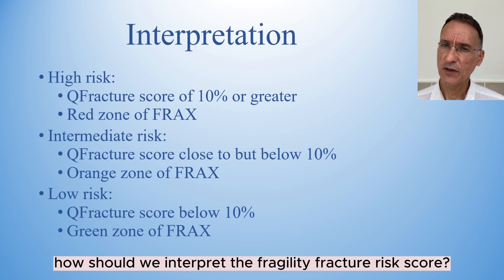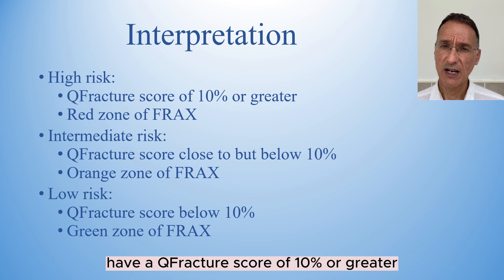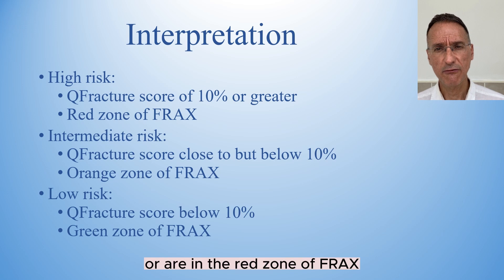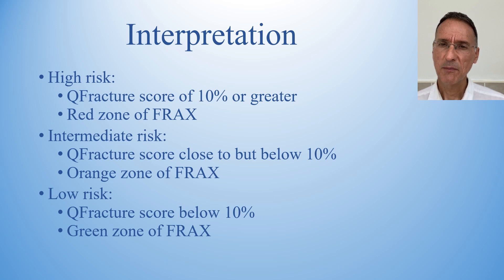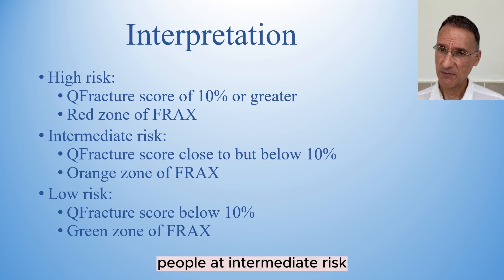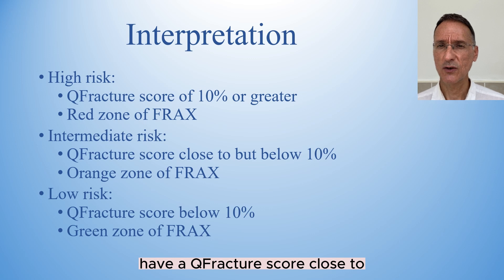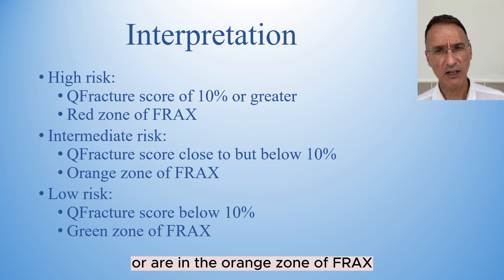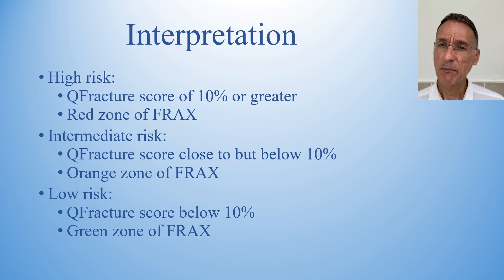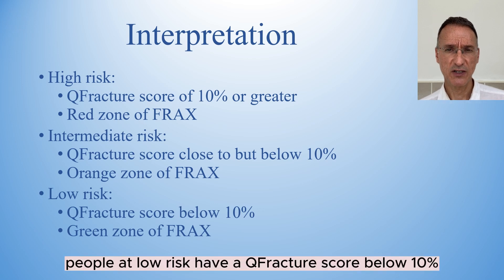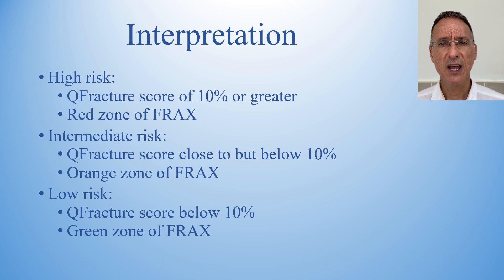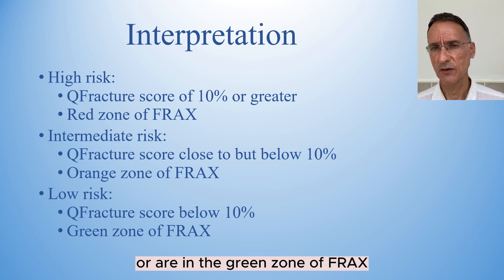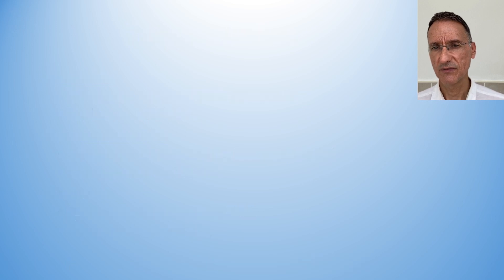How should we interpret the fracture risk score? People at high risk have a Q-Fracture score of 10% or greater, or are in the red zone of FRAX. People at intermediate risk have a Q-Fracture score close to but below 10%, or are in the orange zone of FRAX. People at low risk have a Q-Fracture score below 10%, or are in the green zone of FRAX.